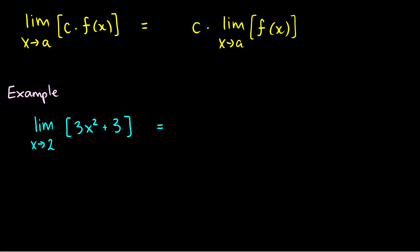The second law is a multiplication law. Essentially, if you have the limit as x goes to a of some constant times a function, it's just equal to that constant times the limit as x goes to a of f of x — we can just pull the constant out of the limit. Here's an example: the limit as x goes to two of three x squared plus three. If we just plug in two and evaluate it, we'll have three times two squared plus three, which equals three times four plus three, which is twelve plus three, which is fifteen.